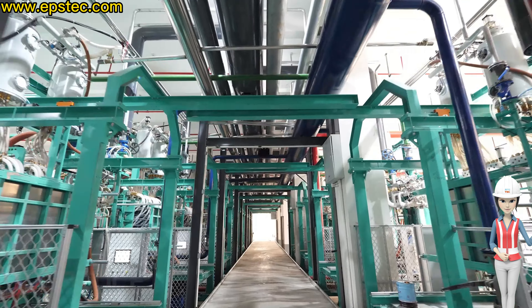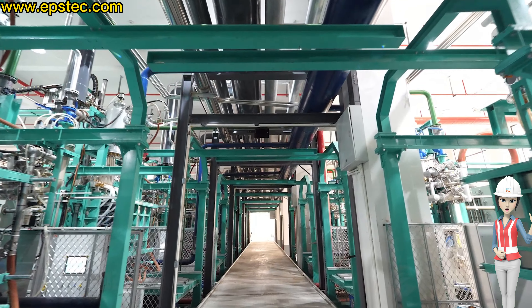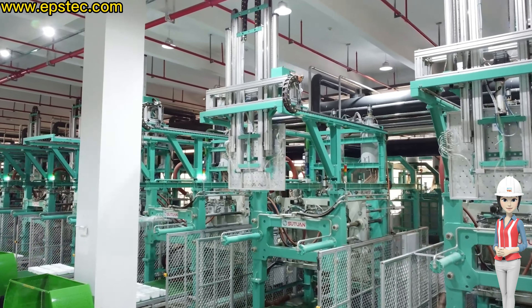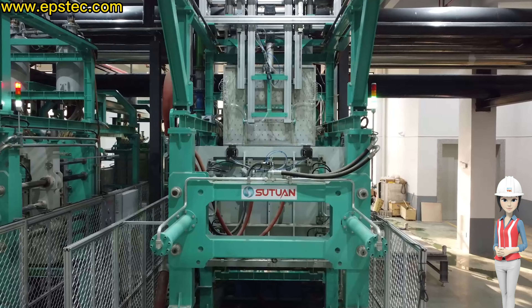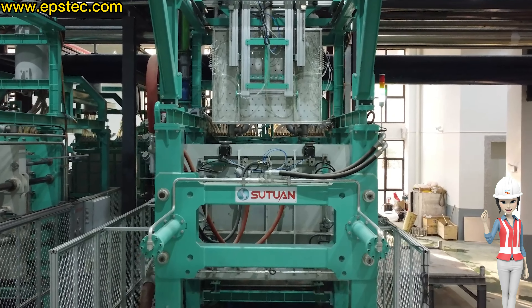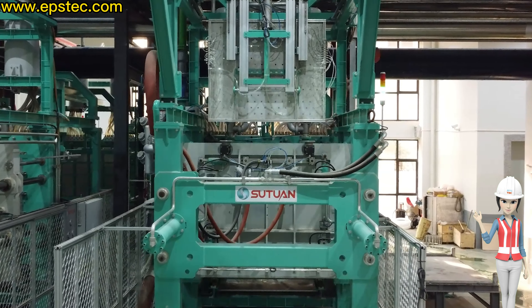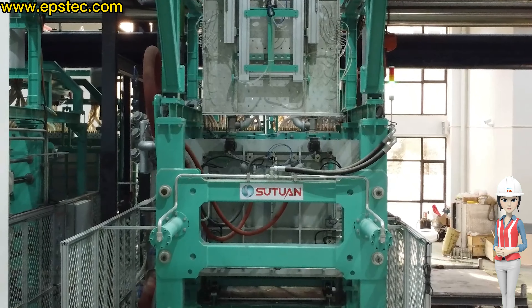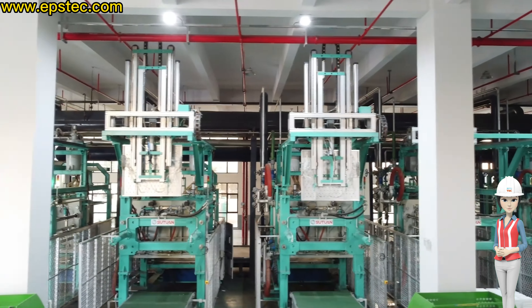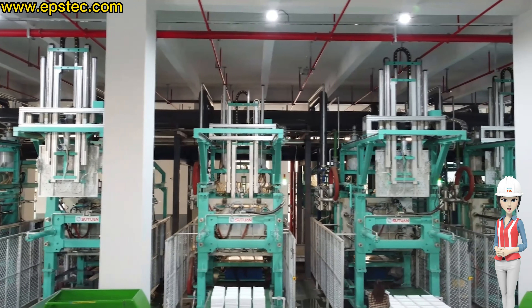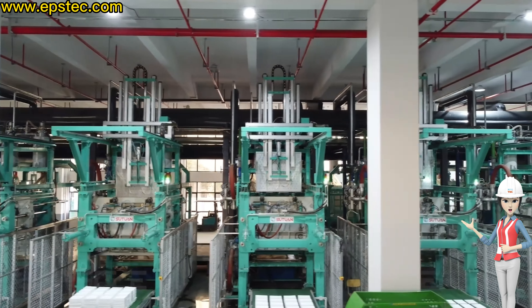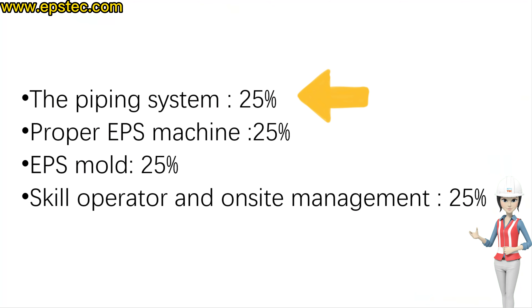Above is the pipe system from our customer's factory EPS project. This is our system engineering. To run an EPS foam plant, the main production elements — in addition to the pipe system — include three other equally important things. The pipe system accounts for about 25%.